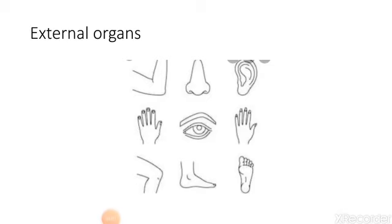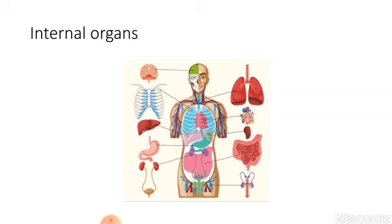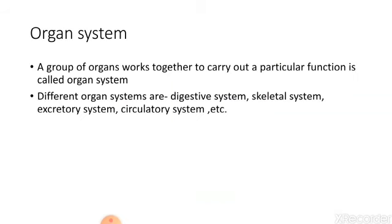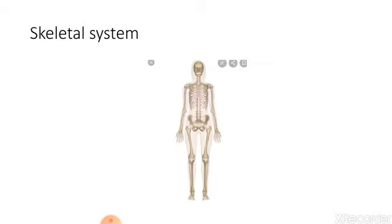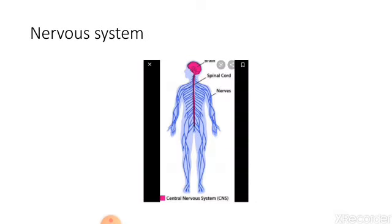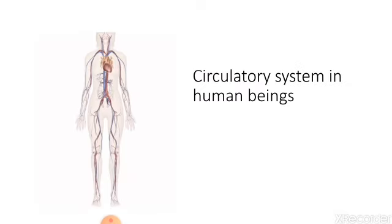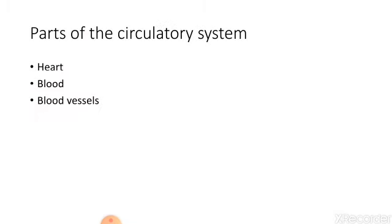Now, let us revise what we have learned till now in this chapter. We have learned about external organs. We have learned about internal organs. We have seen what is organ system. Organ system is a group of organ, which works together to carry out a particular function. Then, we have seen the different organ systems. And today's topic is circulatory system in human being. The parts of circulatory system, which are heart, blood and blood vessels.